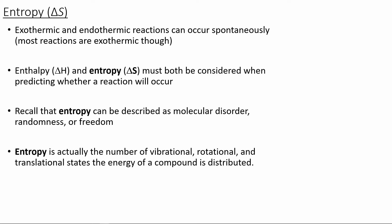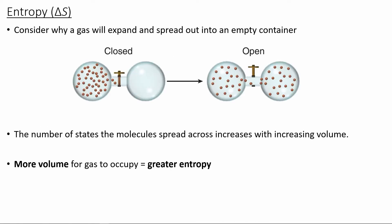Both exothermic and endothermic reactions — enthalpy — can occur spontaneously. So the enthalpy and entropy both must be considered when we're trying to predict if a specific reaction will occur. Consider why a gas will expand when we open up the container to increase the volume. The number of states the molecule can spread across with the increased volume is going to be increased, so since there are more potential states, we're going to have more disorder and greater entropy.